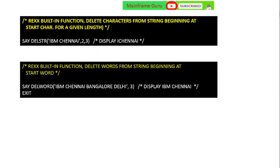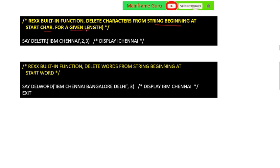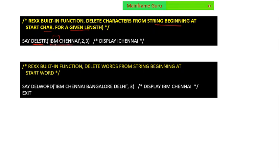The REXX built-in function DELSTR deletes characters from a string beginning at the start position for a given length. For example, using DELSTR on a string — if you want to delete from position 2 for a given length, it will display the remaining string such as 'I Chennai'.